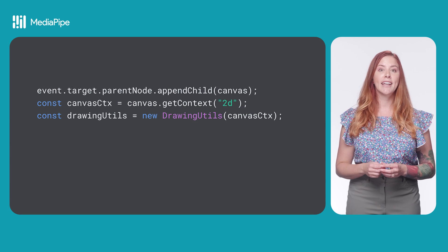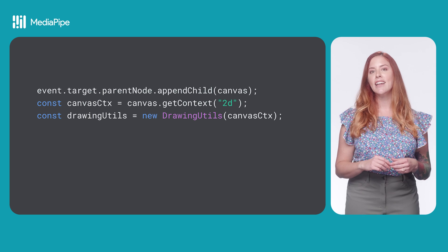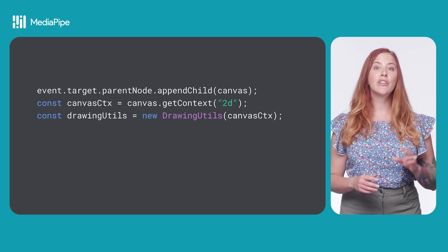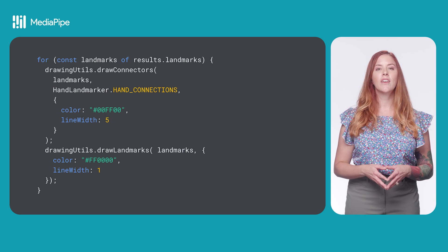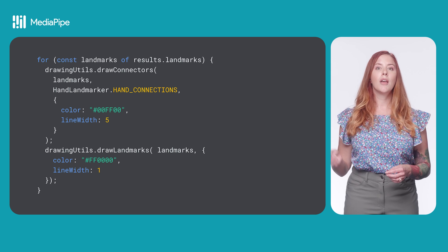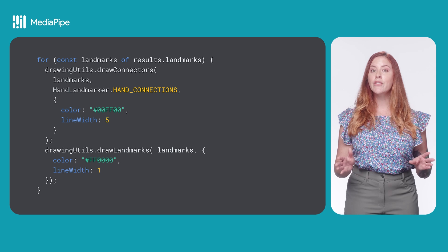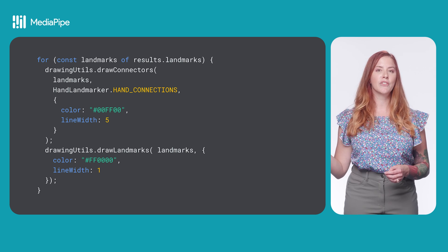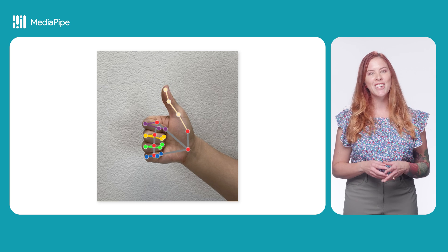The TaskVision package has built-in helper functions for drawing hand landmarks and hand connections on a canvas element. First, create an instance of the DrawingUtils class. Then, iterate through the hand landmarks and call the DrawingUtils.drawConnectors method, passing the landmarks and hand connections. You can also draw points for the hand landmarks using the DrawingUtils.drawLandmarks method. This results in landmarks drawn on the canvas, like this image here.